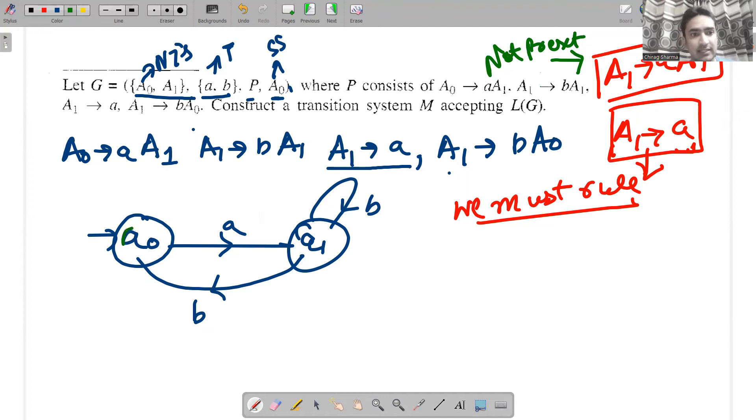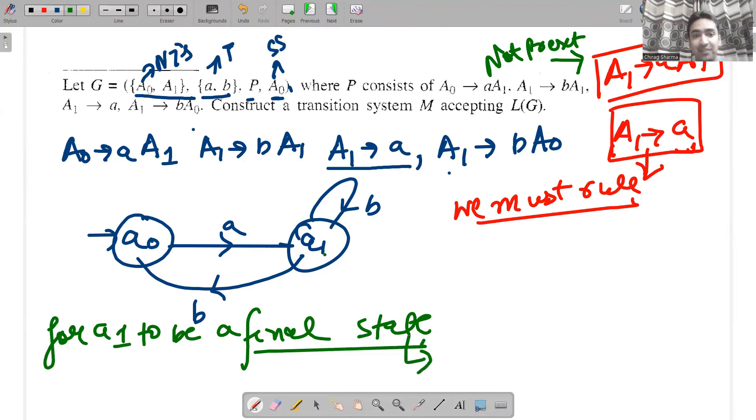I cannot make A1 a final state because for A1 to be a final state, I must have two rules: A0 given single A reaching final state, or A1 given single B reaching final state. But these rules are obviously not present.